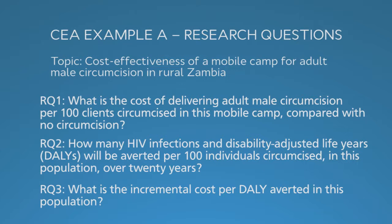We start with cost, which is easiest to understand even for non-economists. We then proceed to health effects — in this instance, HIV infections and DALYs — which are a little harder to understand, especially the DALYs. Finally, we combine the cost and health effects to arrive at the incremental cost-effectiveness ratio. Assembling the incremental cost-effectiveness ratios is the most complex and the last step in this process.